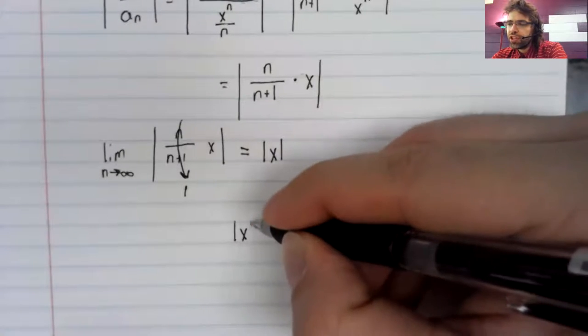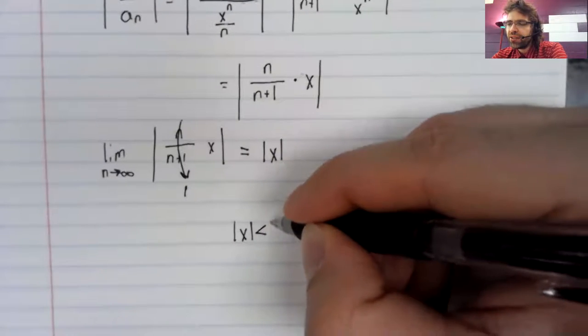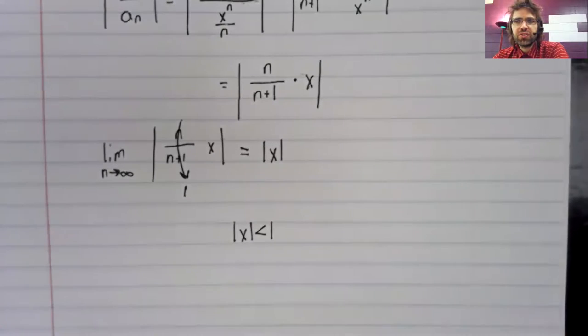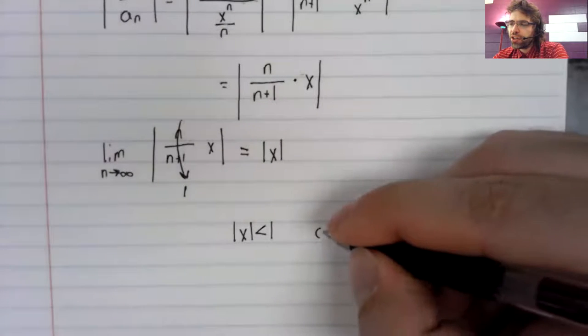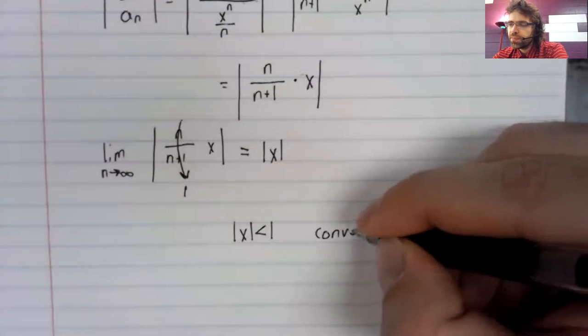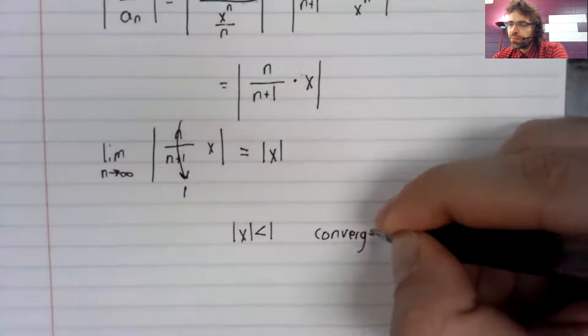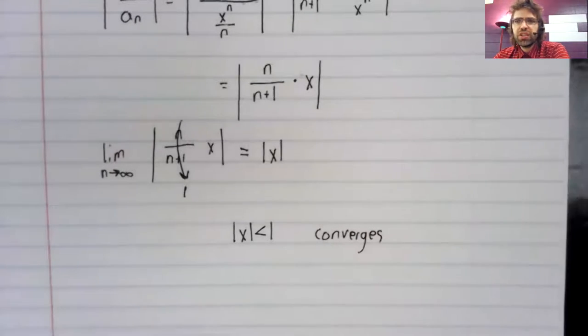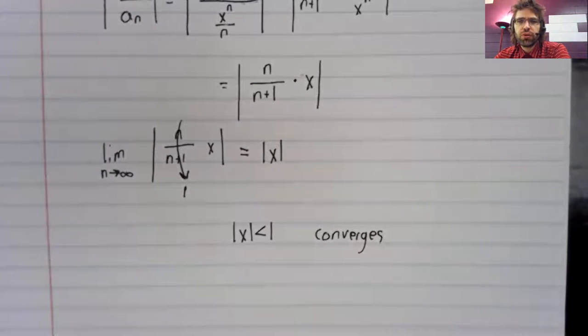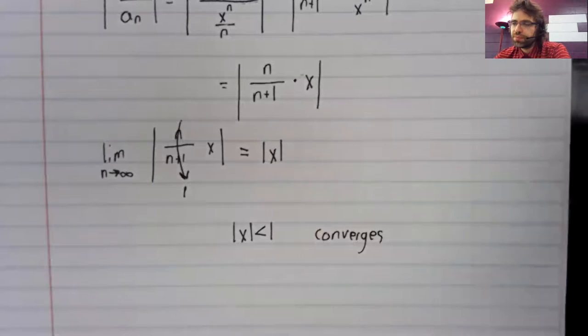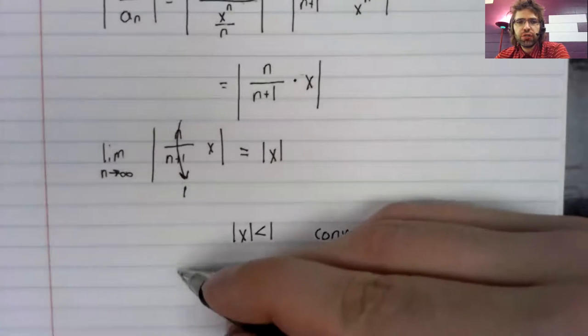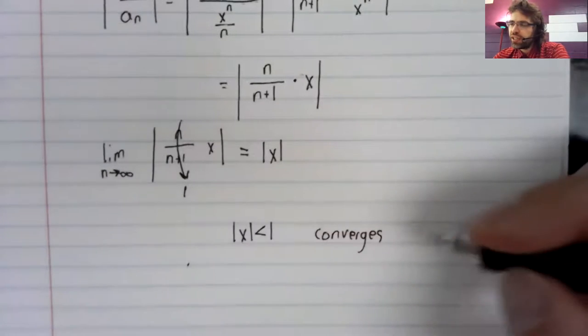And the ratio test says that if this limit is less than one, the series converges. So this power series converges.